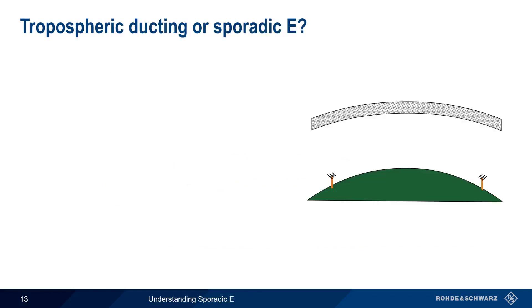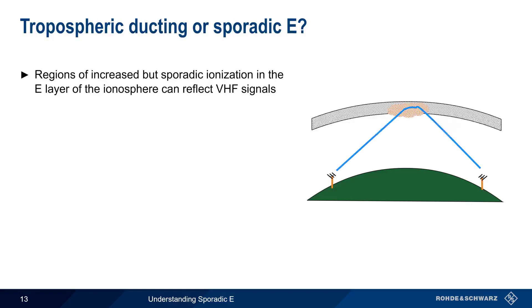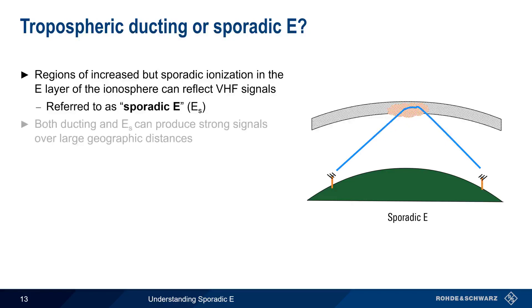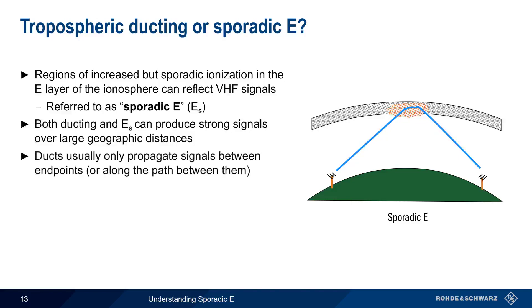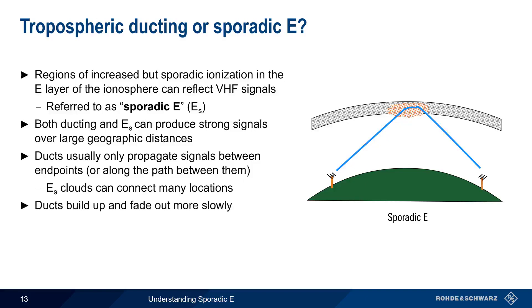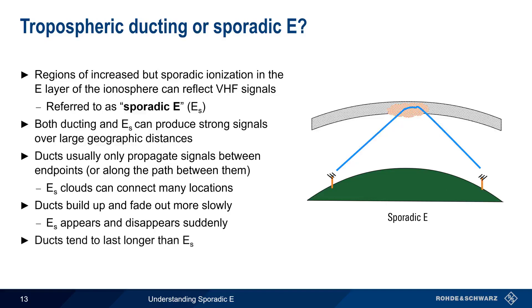Before we conclude, it's worth comparing tropospheric ducting with sporadic E. Patches of increased ionization in the E layer of the ionosphere can reflect VHF signals back to Earth, and this is referred to as sporadic E. Like tropospheric ducting, sporadic E can produce strong signals over large geographic distances, but these two propagation modes can be differentiated in a number of ways. Ducts tend to propagate signals only between the ends of the ducts, or occasionally from points along the path between them, whereas sporadic E clouds can connect a large number of different locations. Ducts also build up and fade out slowly, whereas sporadic E appears and disappears rather suddenly, and while sporadic E only lasts for a short period of time — that is, minutes — ducts often last for several hours or more.